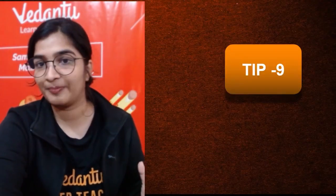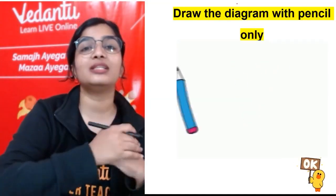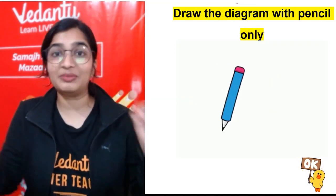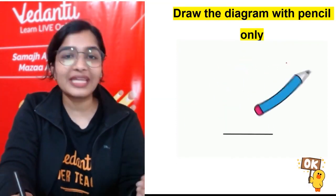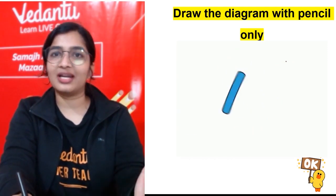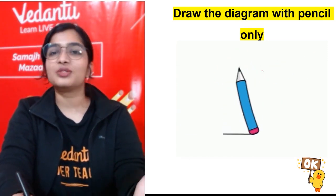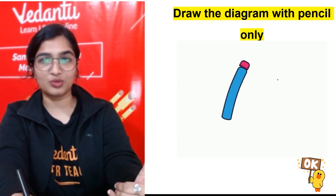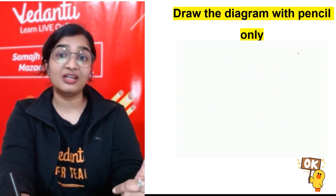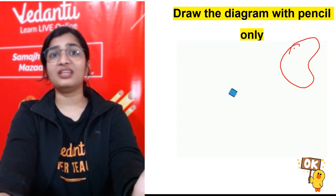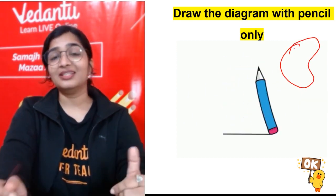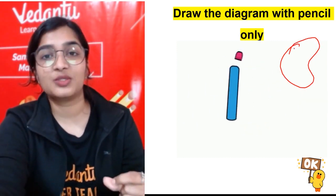Tip number nine: draw the diagram with pencil only. Please do not use the pen. Of course, chemical equations and all that, you can use the pen. Especially in biology, you need to use the pencil. I have seen people drawing the cell using pen. Please always use pencil to draw the diagram and use scale wherever necessary.